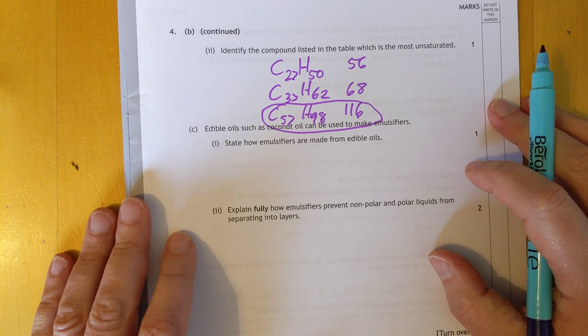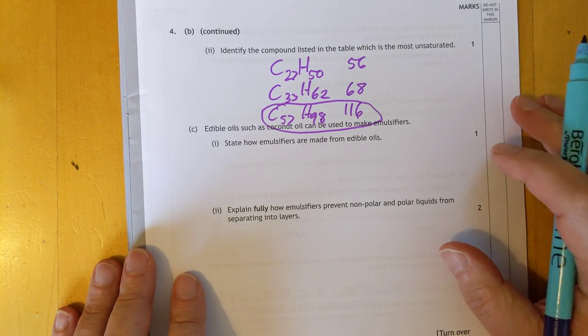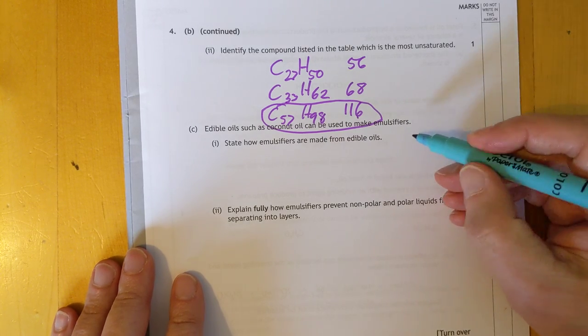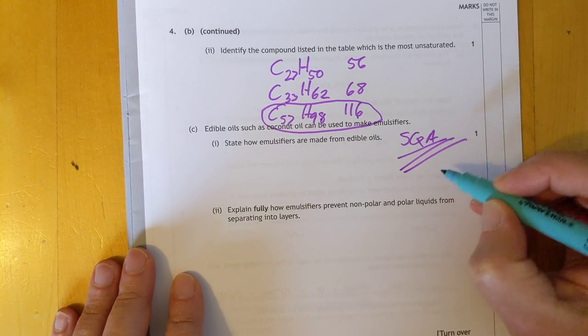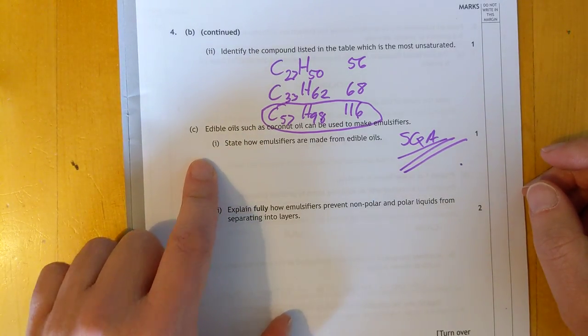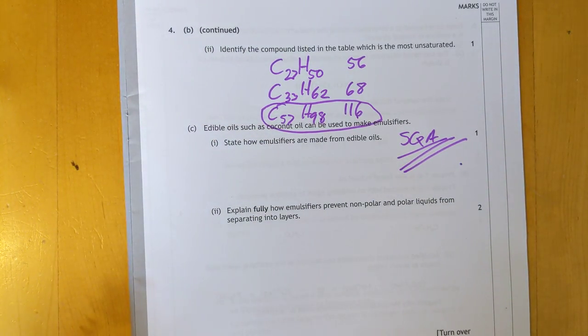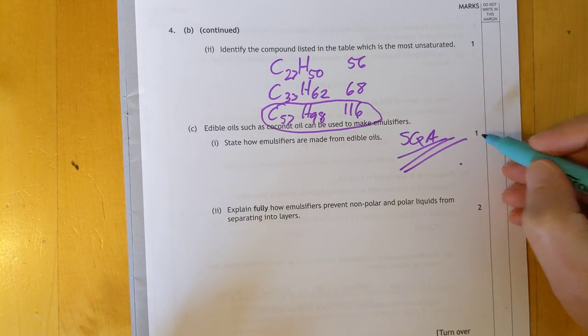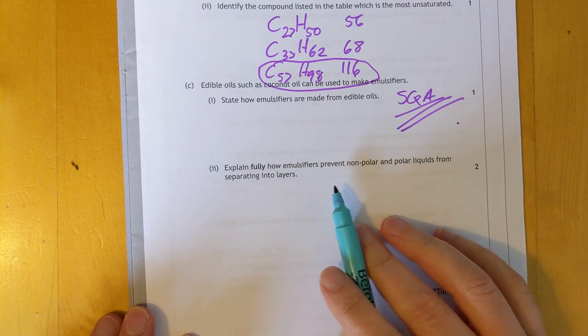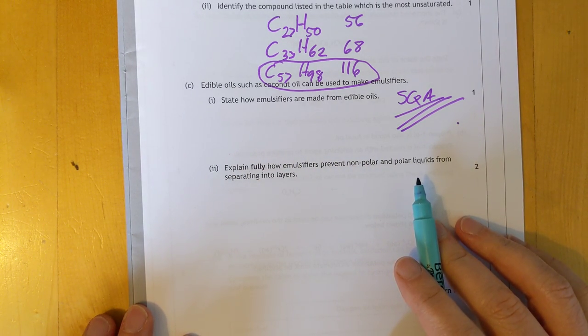Edible oils. I hate this question because the chemistry is wrong. I keep telling SQA about this. See if anybody from SQA is watching this. You show me the chemistry paper that says that you can react edible oils with glycerol to make emulsifiers. And you flippin' well can't. Anyway, let's move on. Sorry while I keep my blood pressure down.